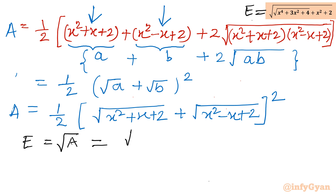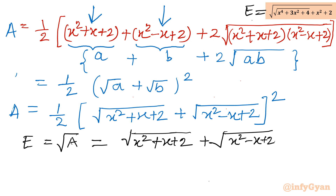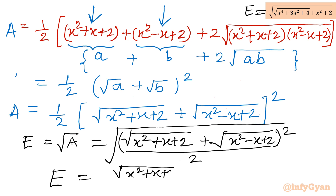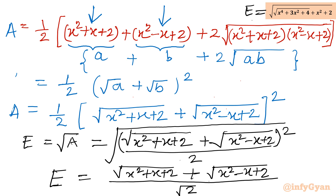So putting the value back, since we are finding the square root of A, the square and square root cancel out, and the denominator comes out as root 2. So our ultimate simplification is square root of x squared plus x plus 2, plus square root of x squared minus x plus 2, all divided by root 2. This is our final simplification or de-nesting of the nested radical expression.